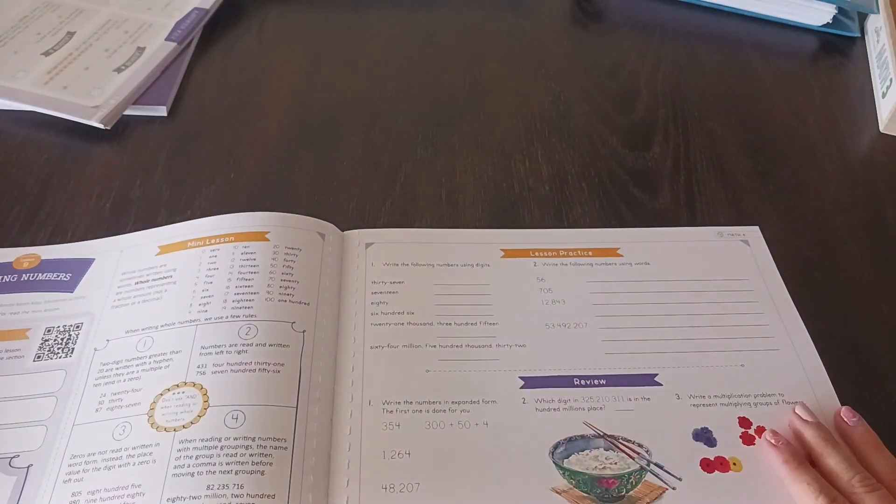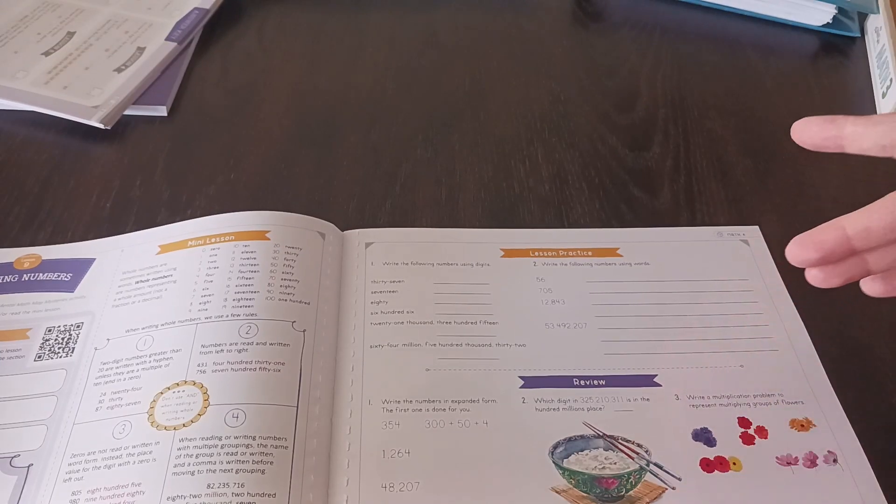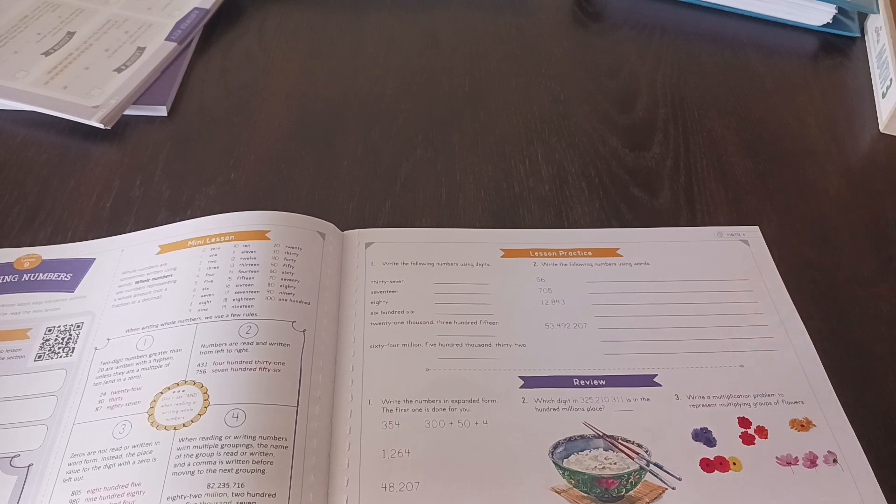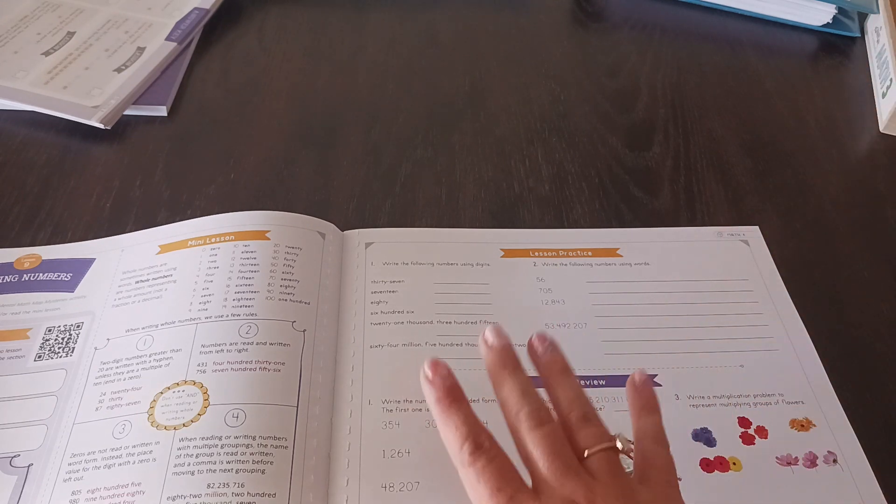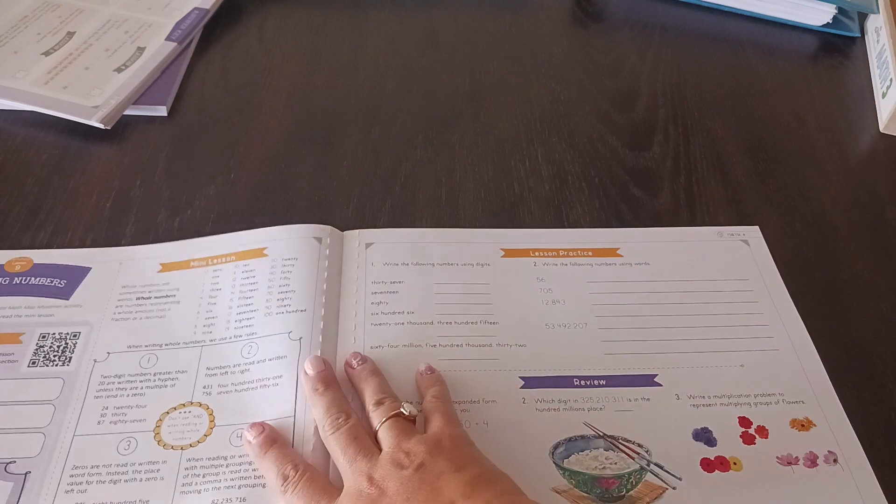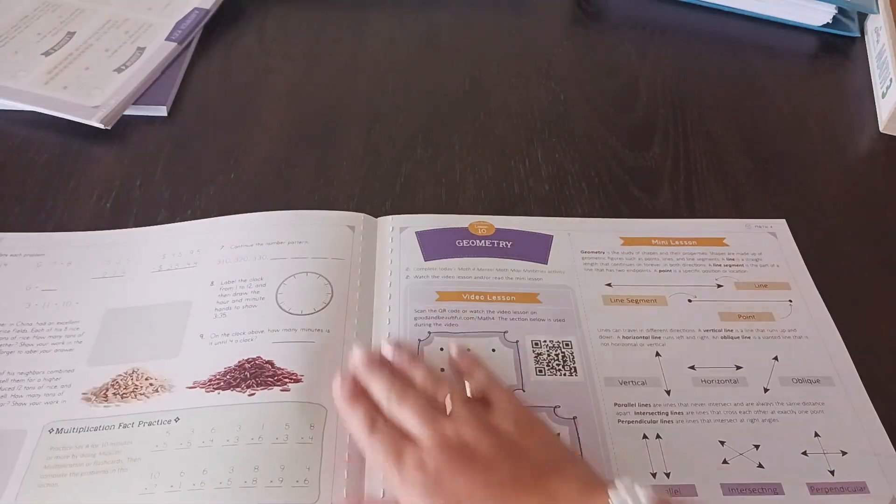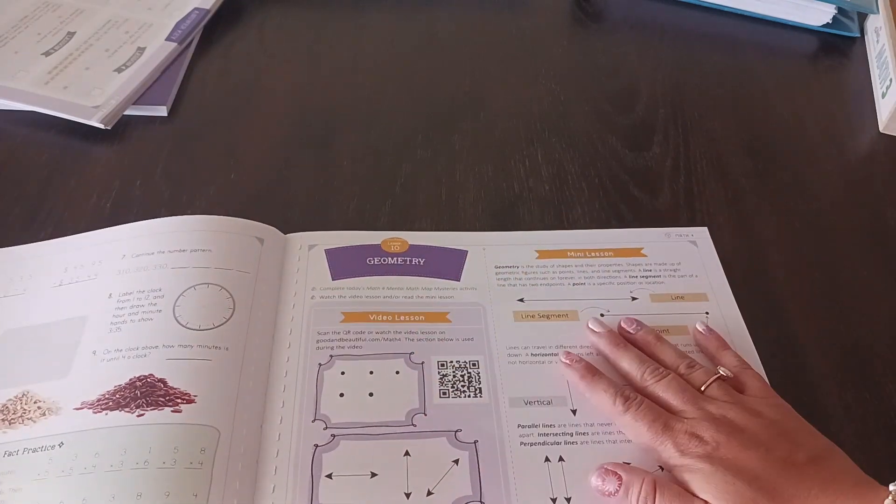It does make it easy. I feel like when we were using horizons math, it was very boring. It was very repetitive. So one thing about the good and the beautiful that we do really like is that it's spiral learning. So they'll introduce a new lesson. Right. And then, like, let's say they're going to introduce geometry. Okay.